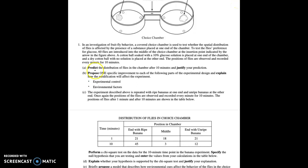So the question asks, predict the distribution of flies in the chamber after 10 minutes and justify your prediction. So we're going to predict and then justify. Our prediction should be that the flies are going to be attracted, or there will be more flies in the side of the choice chamber with glucose. Why is that? Our justification is going to be that there is an energy source, there is sugar on the side, and so therefore, the flies will be attracted to that.